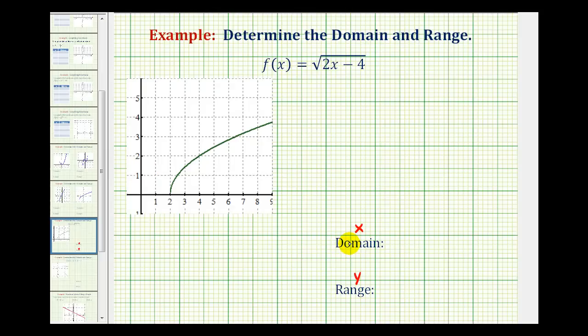So to graphically determine the domain, we want to project the function onto the x axis or determine how the function behaves horizontally. What I mean by that is to determine the domain, notice how the leftmost point of the function would be this point here when x is equal to positive two and then from here all the x values move to the right or increase. So the domain would be from positive two approaching positive infinity.